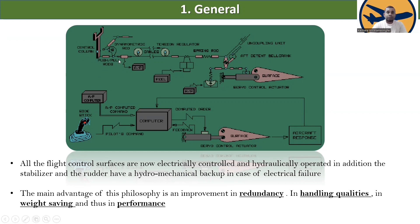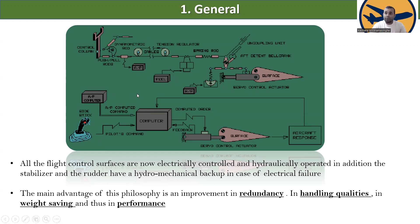You can see the manual control column here, with push-pull rods, the autopilot, cables, tension regulators, rods, spring rods, FD10 bell crank, and the surface control valve. In the fly by wire system, the electrical signal command goes to the computer, and the autopilot computer command goes to the computer, which then sends orders to the servo control actuator. Because of this, weight is saved as many components are removed.